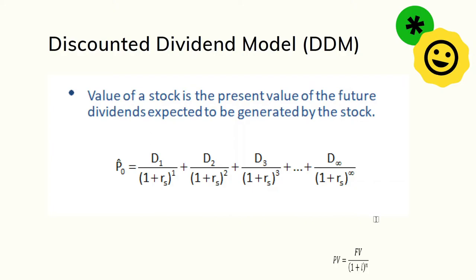In the discounted dividend model, the value of any financial asset — or the value of a stock in this lecture — is the present value of future cash flows. For a stock that produces dividends, the value of the stock is the present value of future dividends. These are the cash flows generated by the financial asset, which in this lecture is common stock.